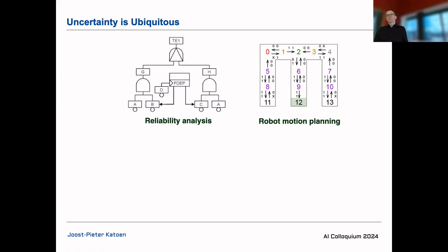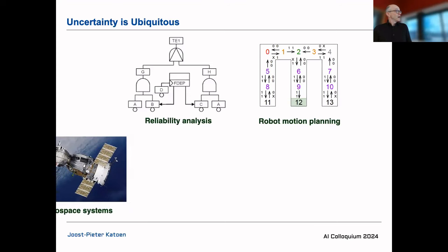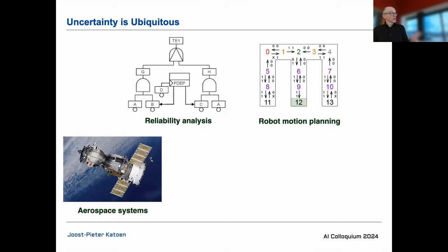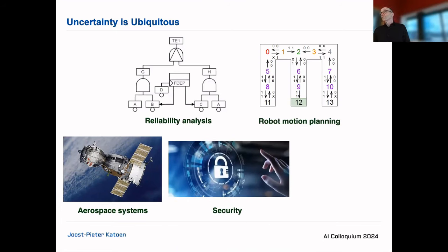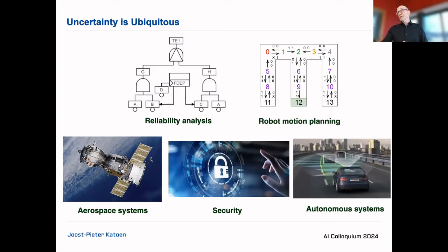In robot motion planning on a grid with equally probable forward positions, you have to make a plan to leave a labyrinth — it's about dealing with uncertainty to get an optimal plan, for instance to leave within a minimal expected number of steps. In autonomous aerospace systems, security mechanisms rely on randomization so you don't know what your attacker will do. In autonomous cars operating in uncertain environments where you cannot fully observe everything, the question is how to design systems that are safe with a low probability of collisions.